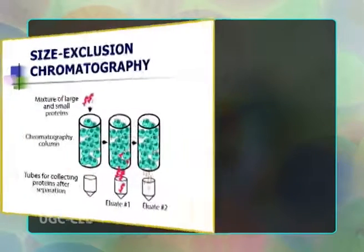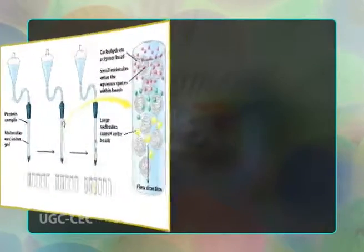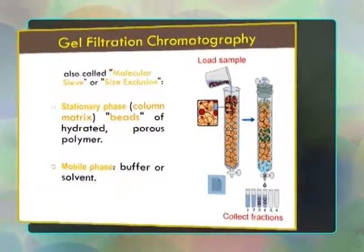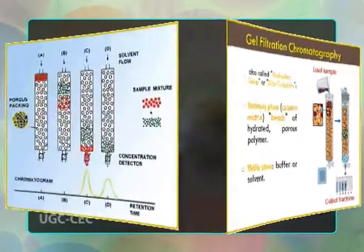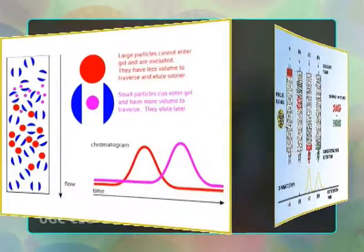Principle of gel filtration: Size exclusion chromatography is the separation of mixtures based on molecular size, more correctly their hydrodynamic volume. Separation is achieved by the differential exclusion or inclusion of solutes as they pass through a stationary phase consisting of heteroporous cross-linked polymeric gels or beads. The process is based upon different permeation rates of each solute molecule into the interior of gel particles. Size exclusion chromatography involves gentle interaction with the sample, enabling high retention of biomolecular activity. For the separation of biomolecules in aqueous systems, SEC is referred to as gel filtration chromatography, while separation of organic polymers in non-aqueous systems is called gel permeation chromatography.